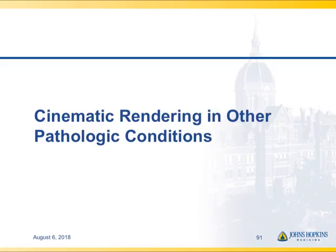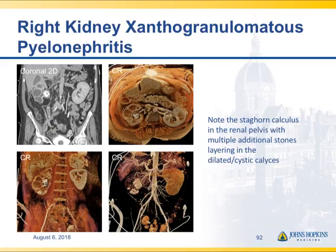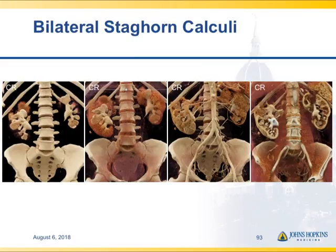Here are a few last cases. This is an unusual case of xanthogranulomatous pyelonephritis — look at the right kidney: it's large, with a staghorn calculus, dilated calyces, very classic for XGP. Here's an example of bilateral staghorn calculi. We're developing new algorithms for looking at the kidneys — stone detection, tumor detection, staging the vascular component of the tumor, and getting more and more information.